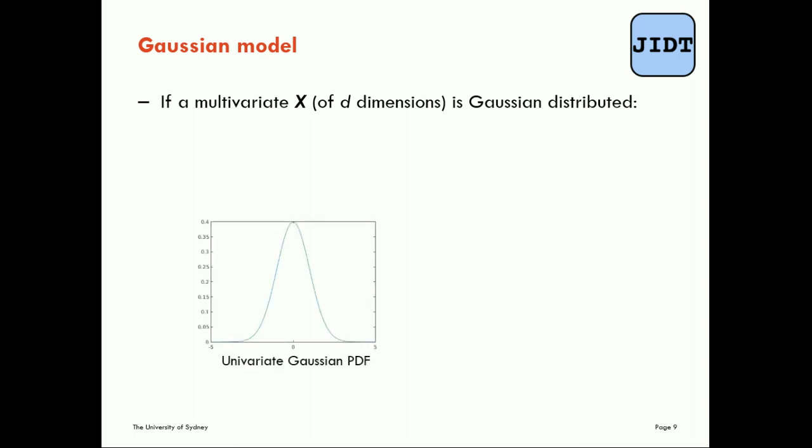It's easy to understand what a Gaussian distributed single variable looks like. We know that the probability density function for a univariate Gaussian looks something like this with a mean zero and standard deviation one.